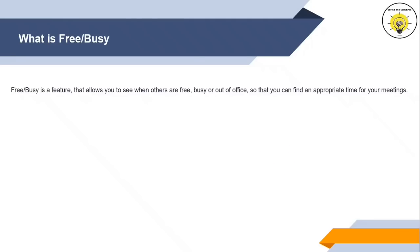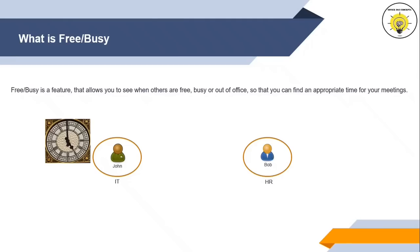Let's say we have two users, John and Bob. Both users work in the same organization. John works in the IT department and Bob works in the HR department. John wants to schedule a meeting with Bob at 5pm. To check if Bob is available, John can simply call him. But what if Bob is not answering the phone or is not available? Then how will John find out if Bob is available at 5pm?